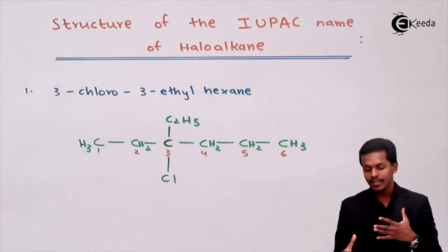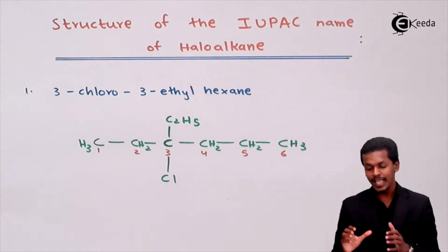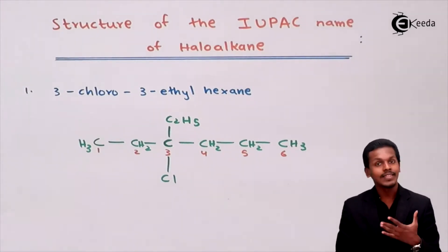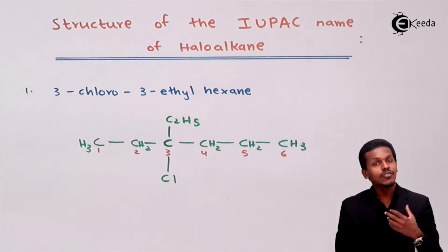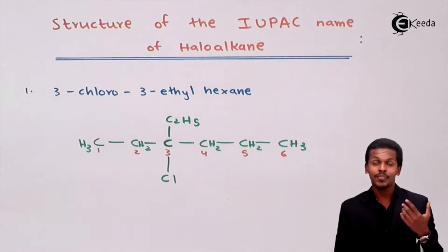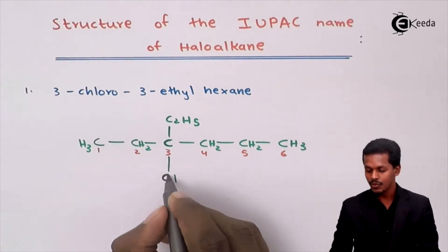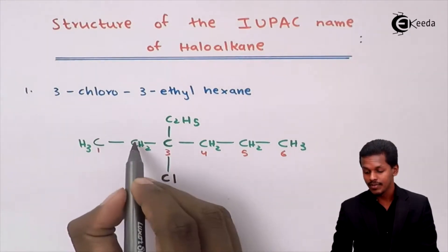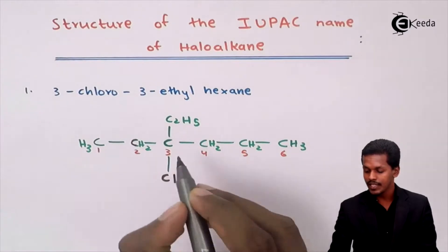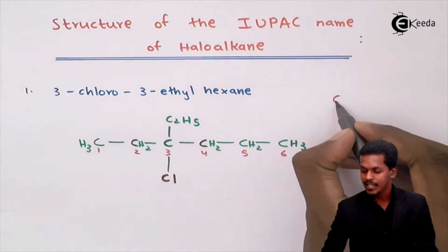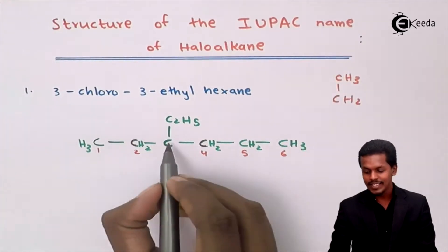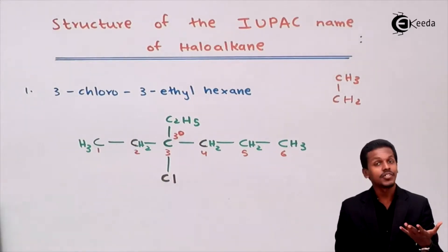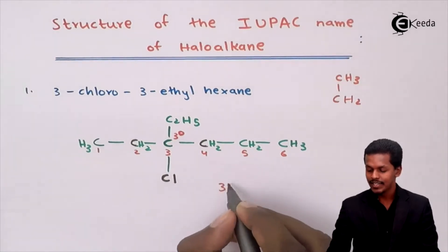Now let us classify this compound. There is only one halogen atom associated with this compound, so this is a monohalogen derivative of alkane. Now, which type of monohalogen derivative is it? The chlorine atom is attached to a carbon that is bonded to three other carbon atoms, making it a tertiary carbon atom. Since chlorine is attached to the tertiary carbon, this is a tertiary alkyl halide.